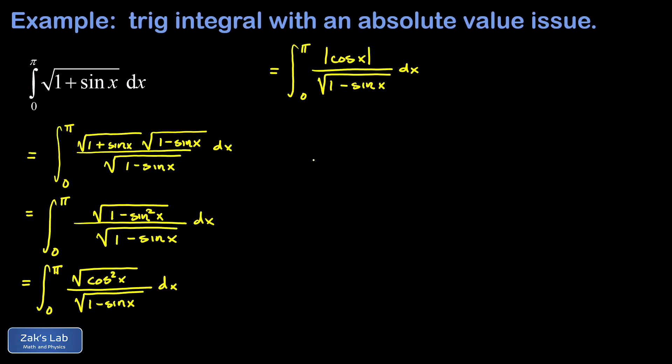How do you deal with an absolute value of cosine of x inside of an integral? Well you have to understand where the cosine function is positive and where it's negative. Here's a picture of the cosine function on zero to pi and it crosses the x-axis at pi over 2.